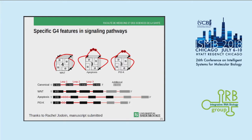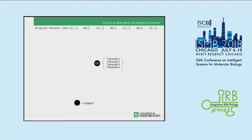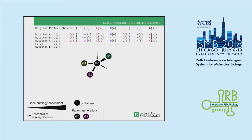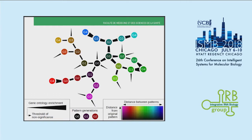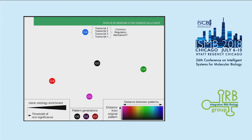I think having a pattern to define G-quads is not a bad idea — the real problem is using one pattern to fit all of them. Different patterns can describe different subsets. I'm currently building a genetic algorithm that takes an original pattern fitting a subset of G-quads with a given gene ontology enrichment, mutates that pattern to change which transcripts correspond to it, and tracks how the gene ontology enrichment changes. At the end I hope to find common regulatory mechanisms, and this will be the final chapter of my thesis.